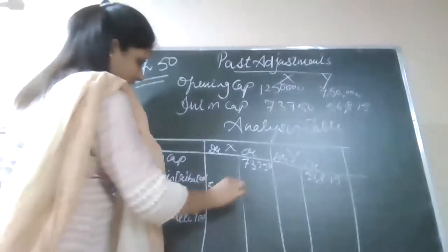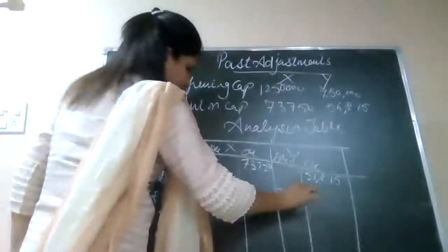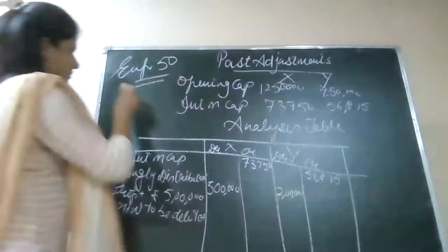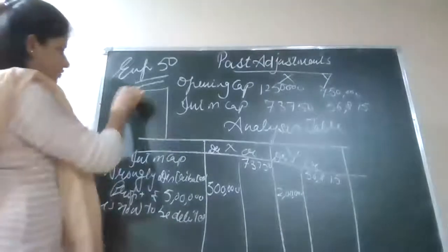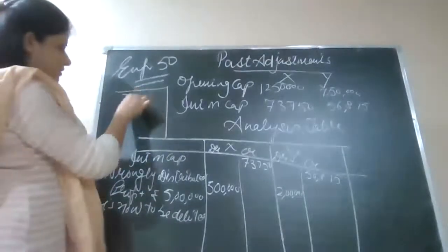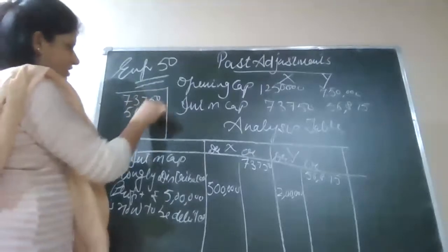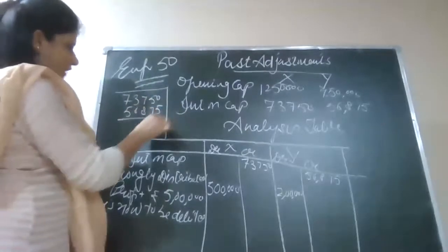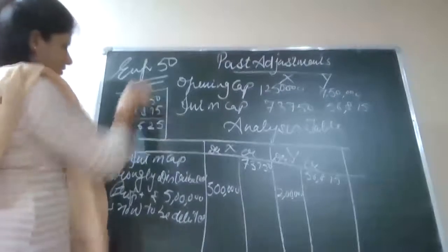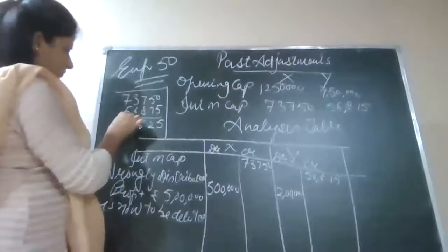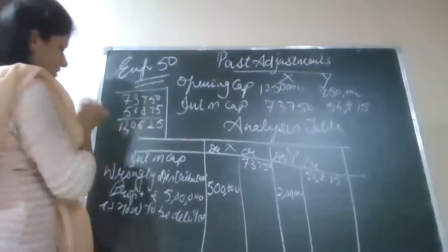I am taking back 3 lakh from X and 2 lakh from Y. Now I will be calculating the correct profit. Correct profit away from 10 lakh. So the values are 73,750 and 56,875; this is 5, this is 2, this is 16, this is 10, and this is 30,000.